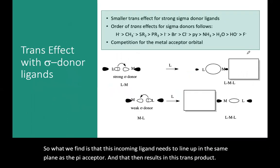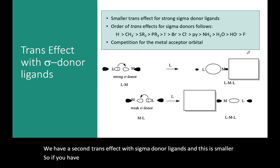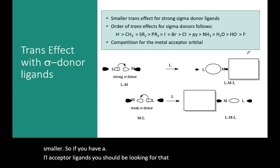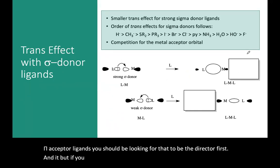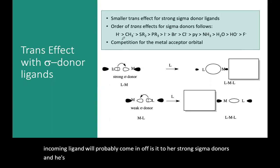There is a second trans effect with sigma donor ligands, and this is smaller. So if you have a pi acceptor ligand, you should look for that to be the director first. But if you don't, then you would predict that the new incoming ligand will probably come in opposite to your strong sigma donors. Here is a list of the strong sigma donors in order of strength.